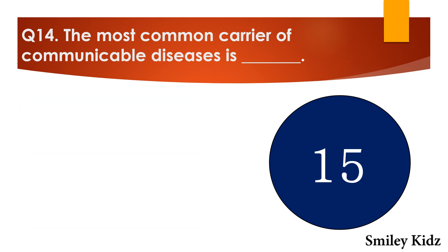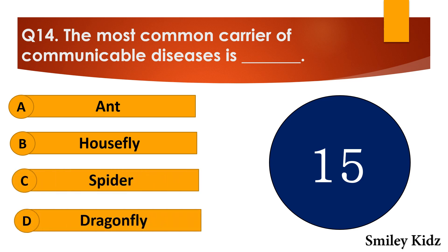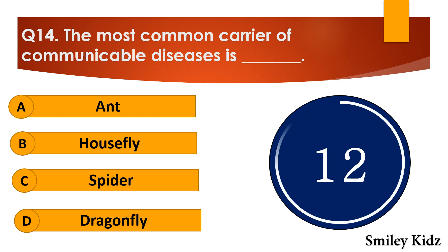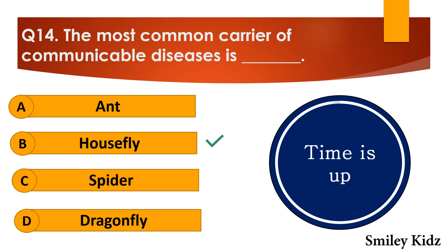Question number fourteen: The most common carrier of communicable diseases is dash. The options are: A. Ant, B. Housefly, C. Spider, or D. Dragonfly. Your time starts now. Your time is up and the right answer is option B — housefly. The most common carrier of communicable diseases is the housefly.